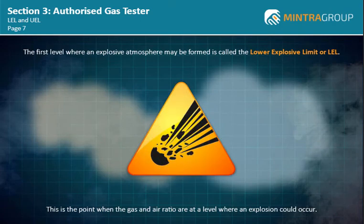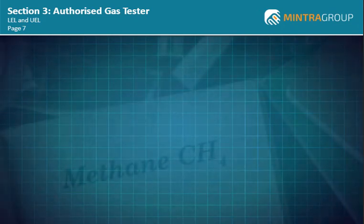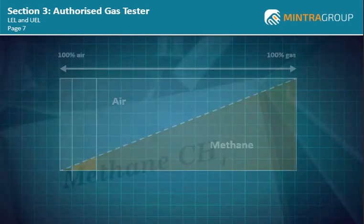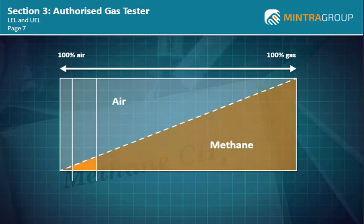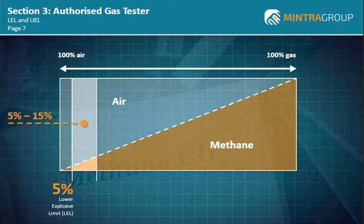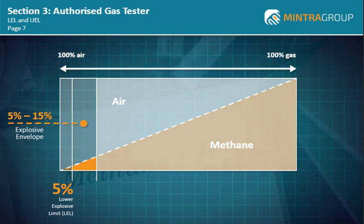Let's consider methane, one of the most common hydrocarbon gases found in our industry. Only a small amount of methane is required in air before it reaches its LEL. 5% by volume of methane in air is its LEL. Any ratio of methane from 5% to 15% by volume in air will form an explosive atmosphere — this is called the explosive envelope. Any ratio above 15% by volume in air is deemed too rich to cause an explosion and is known as the Upper Explosive Limit, or UEL.